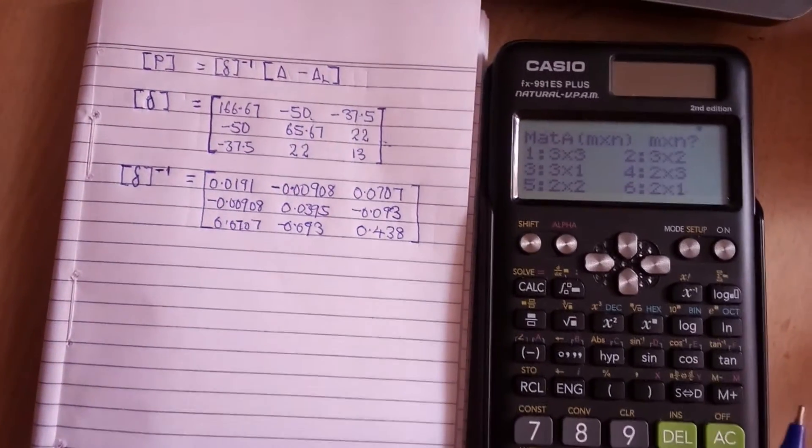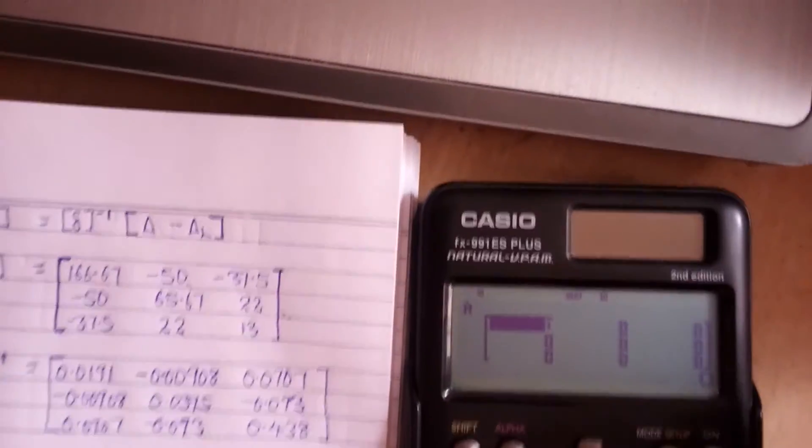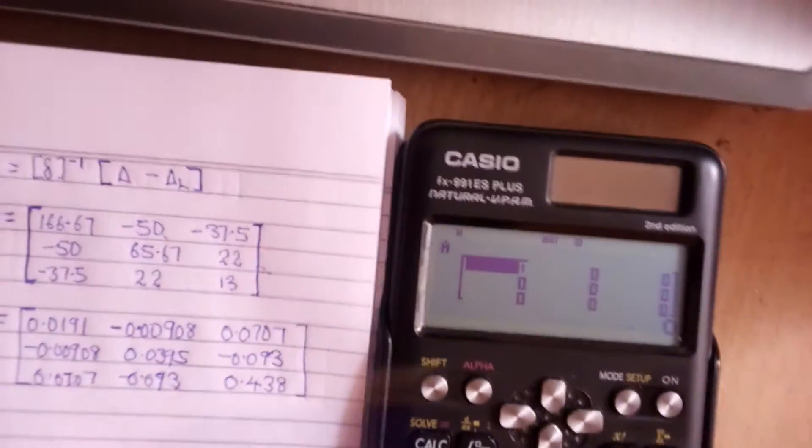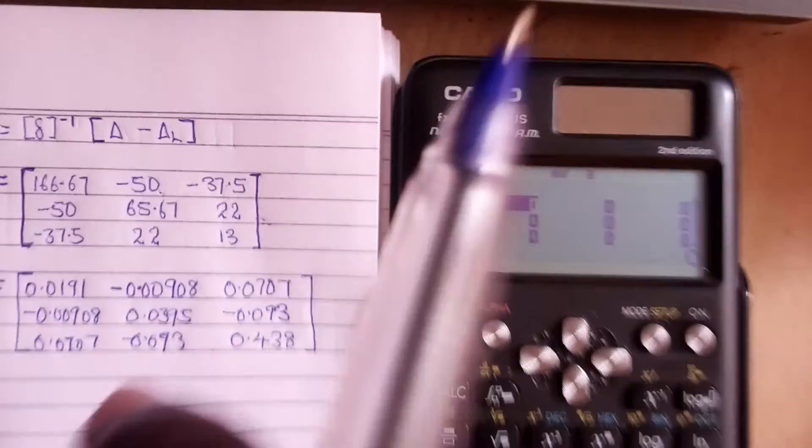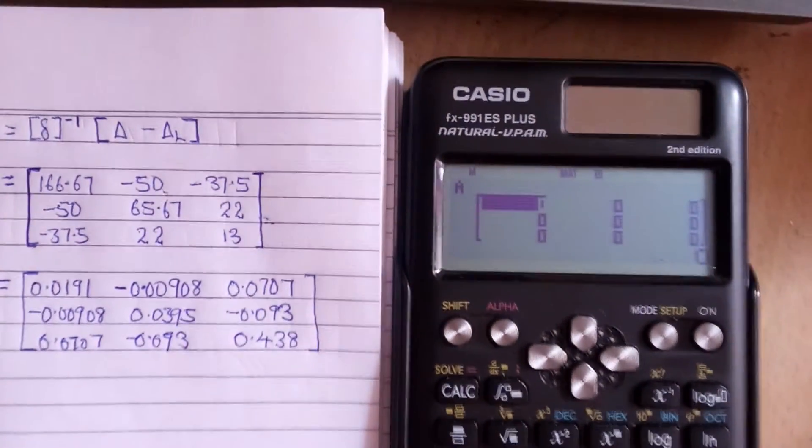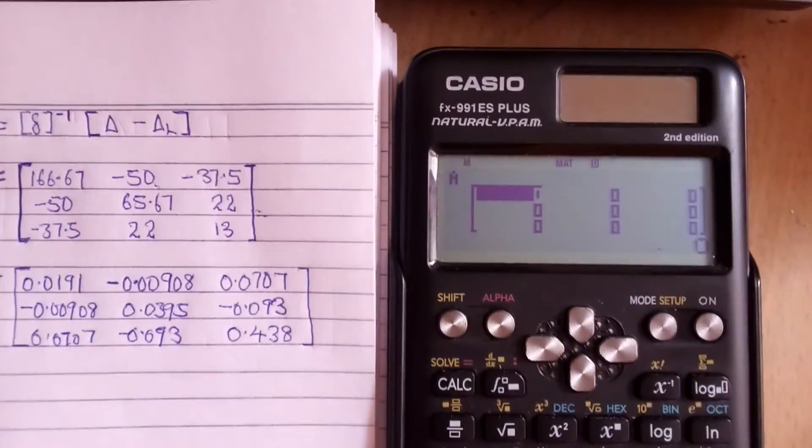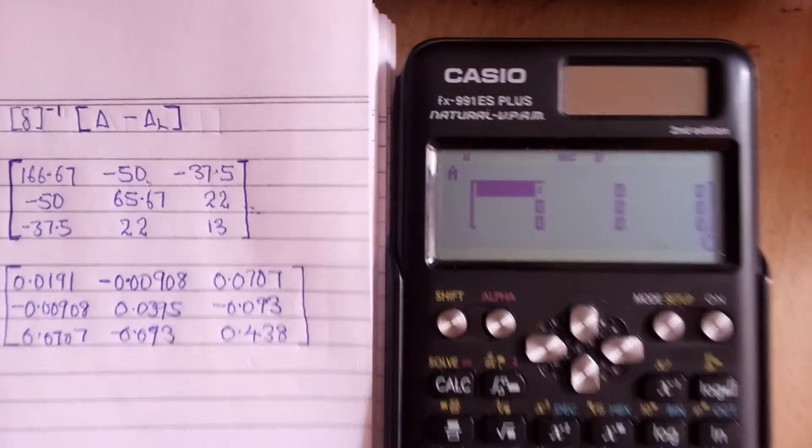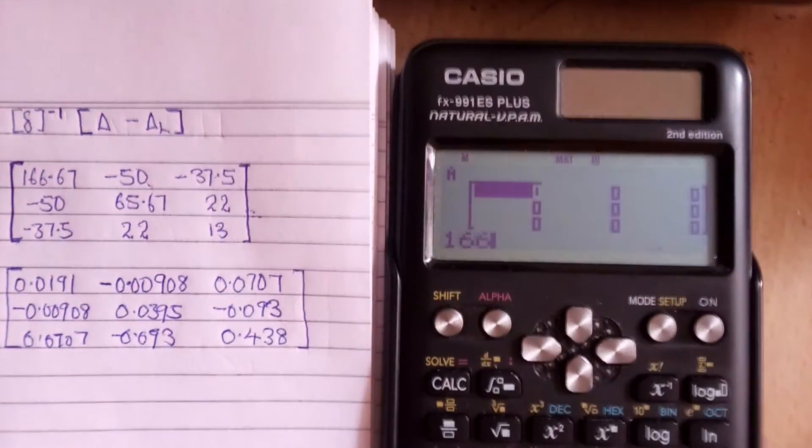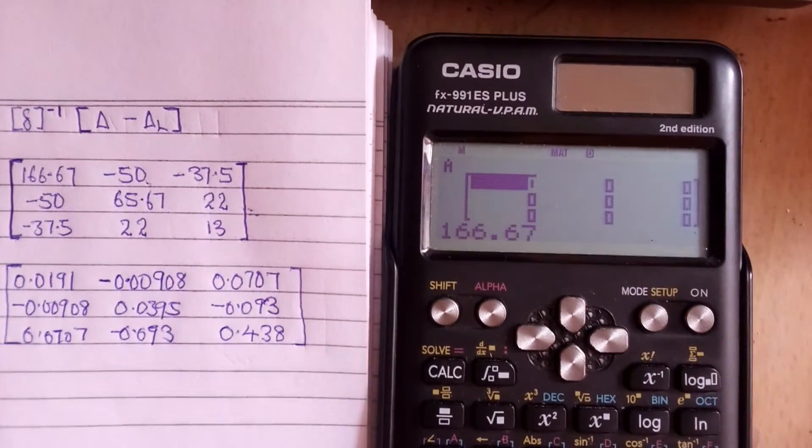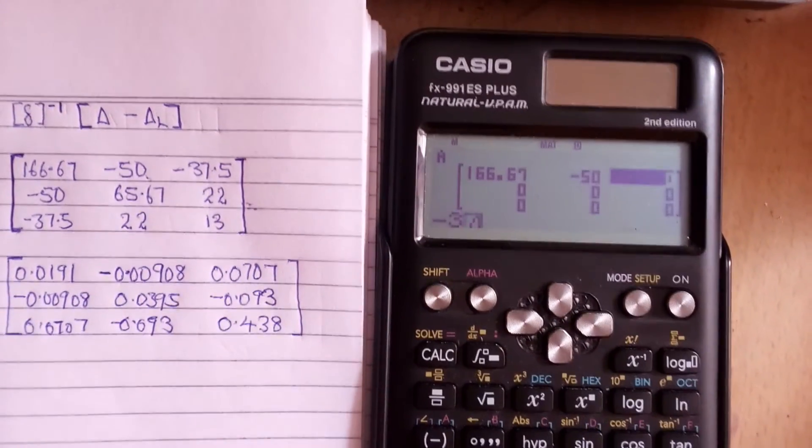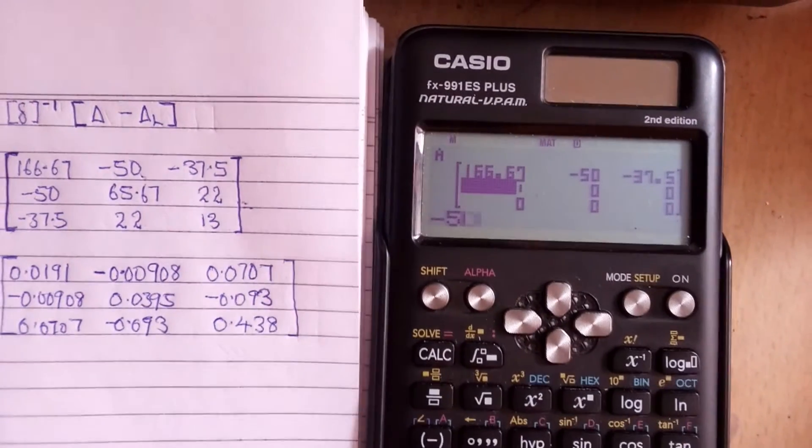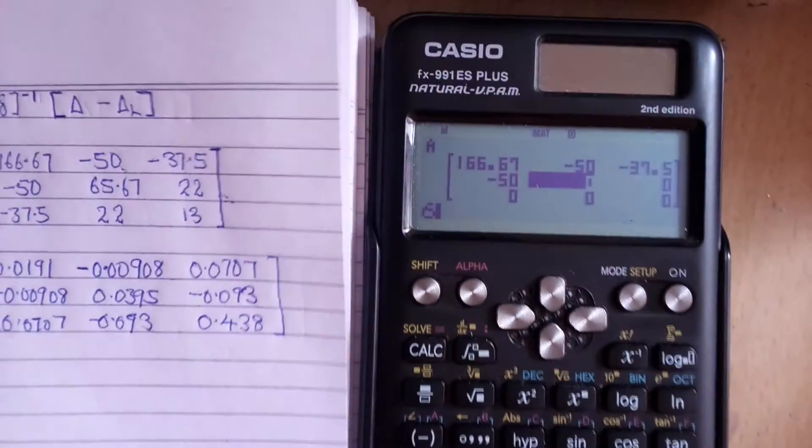It was 3 by 3. It has been deleted because I have already used it. If you want to check, you can still check again to see this number, because if you make a mistake you are done with it. So let's quickly type everything again: 166.67, equal to, minus 50, equal to, minus 37.5, equal to, minus 50, equal to, 65.67, and so on.